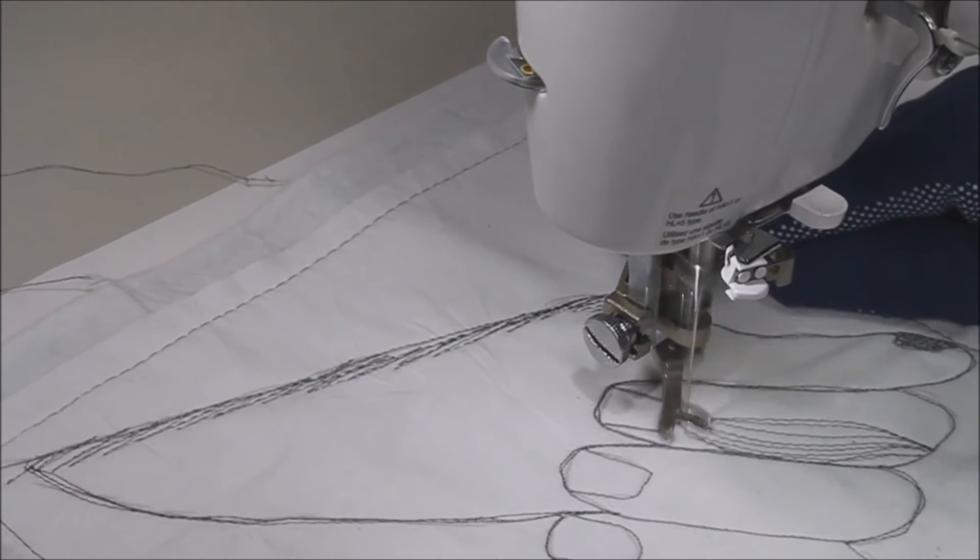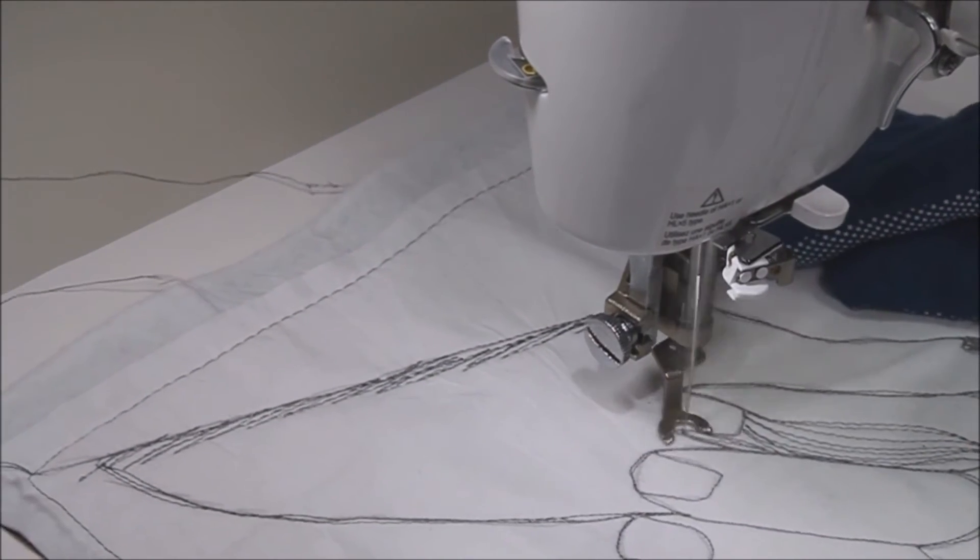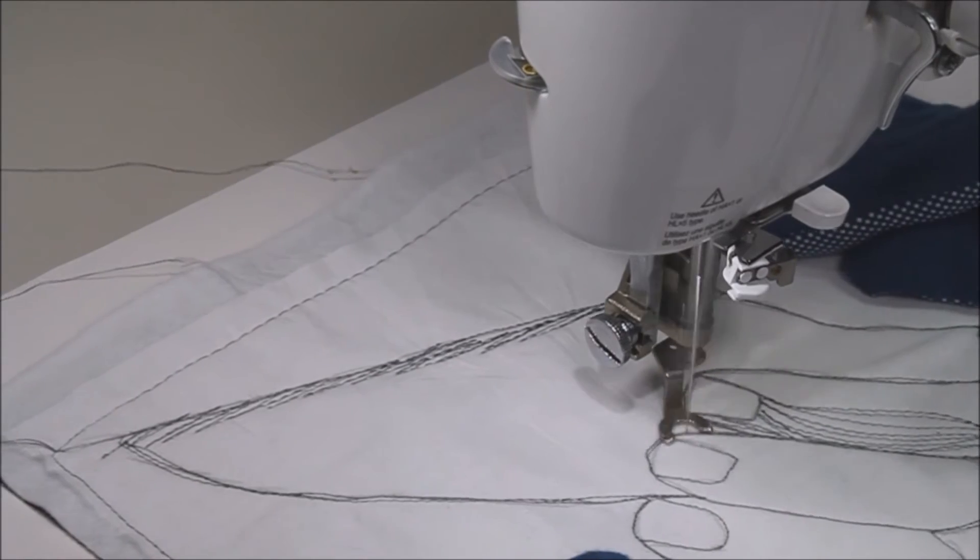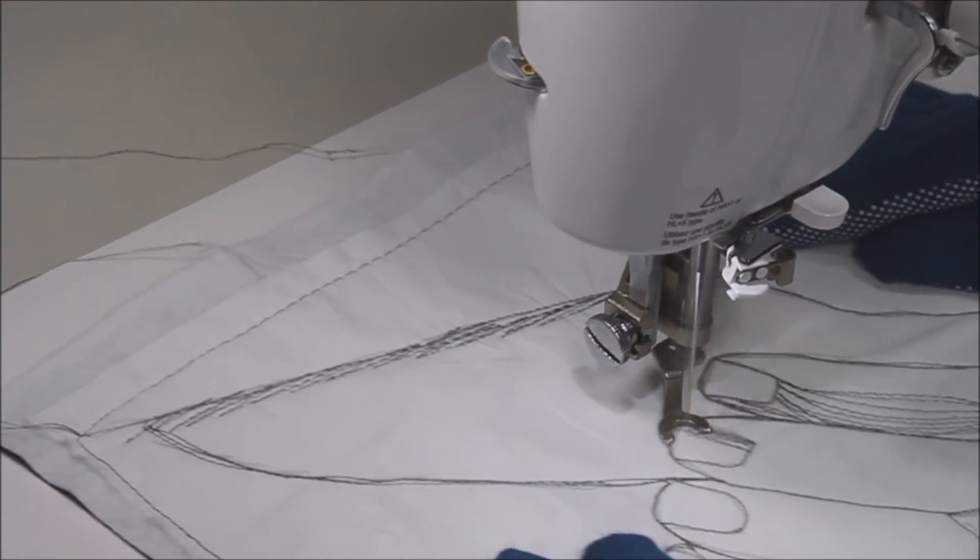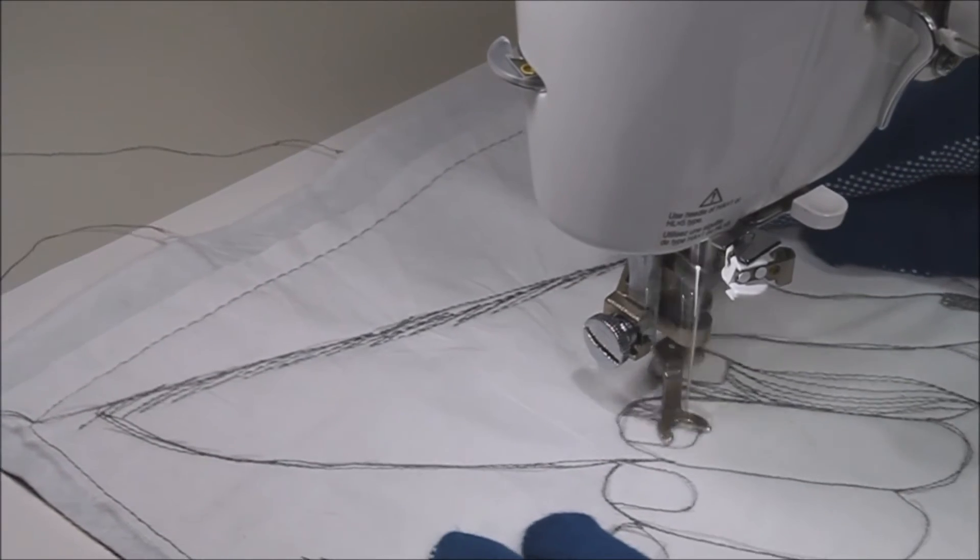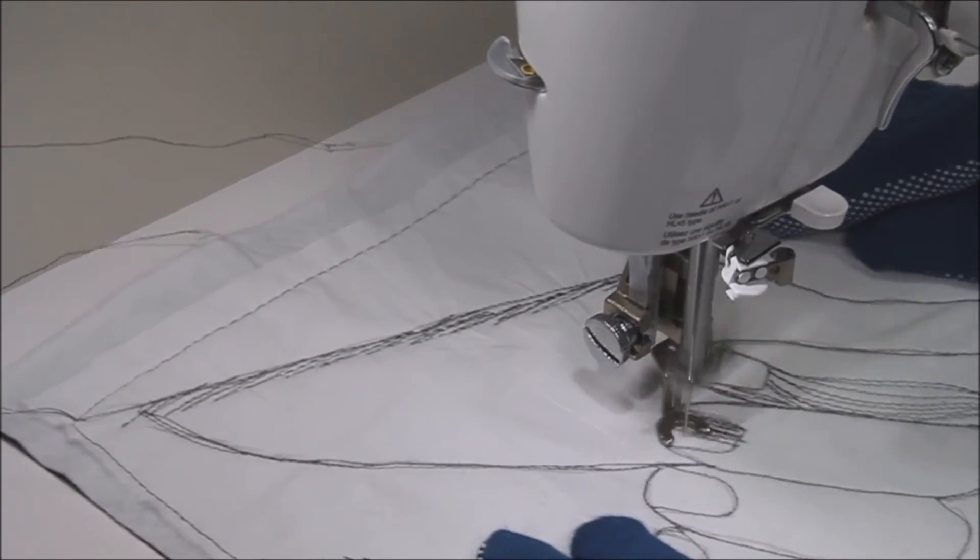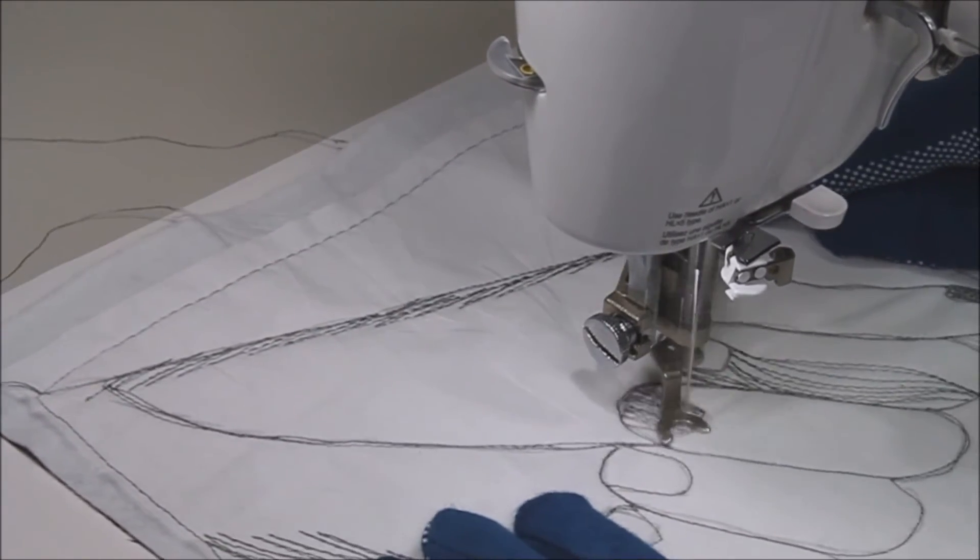So as you can see, the lines are a little bit farther apart, which results in lighter shading. And now I move on to the fingernail again and I want this to be dark, so I make my stitch lines closer together.